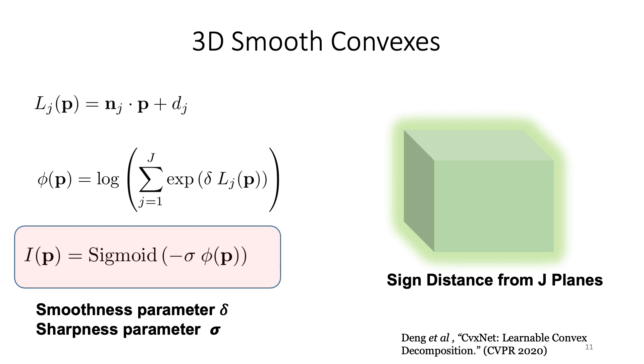So sigma controls the sharpness of the parameter, which is kind of equivalent to the variance of the Gaussian.